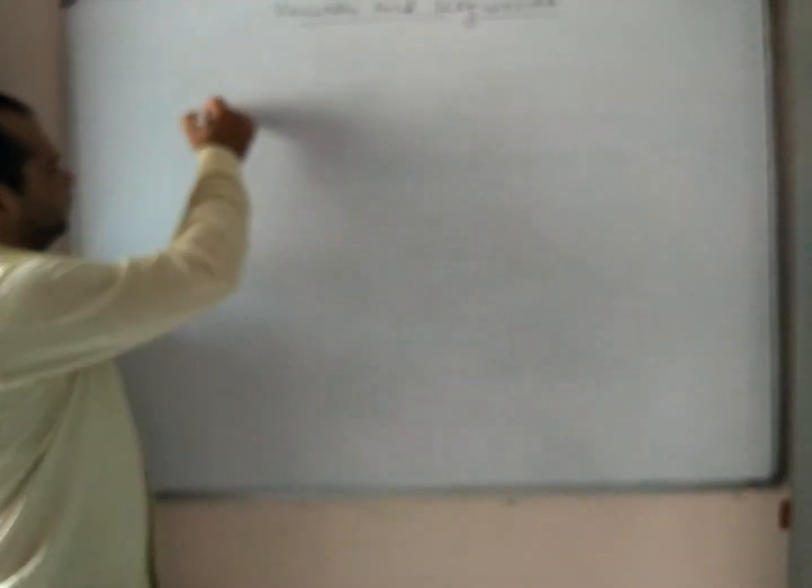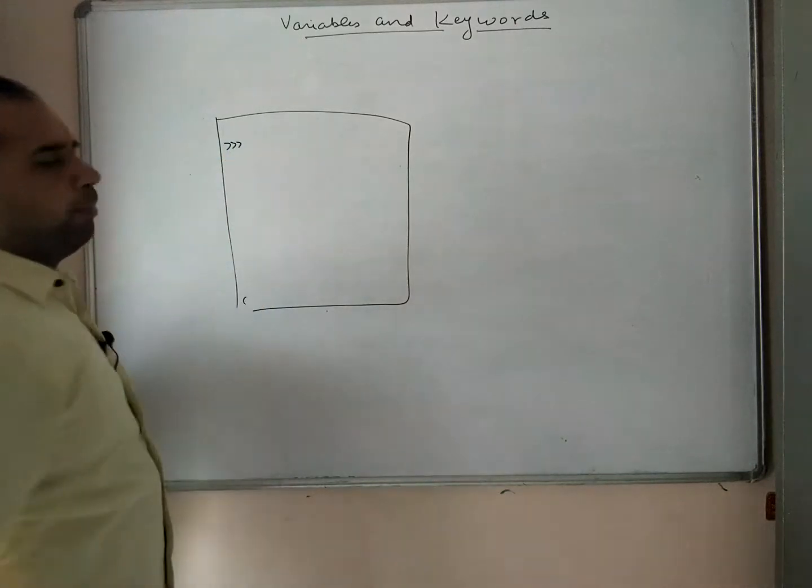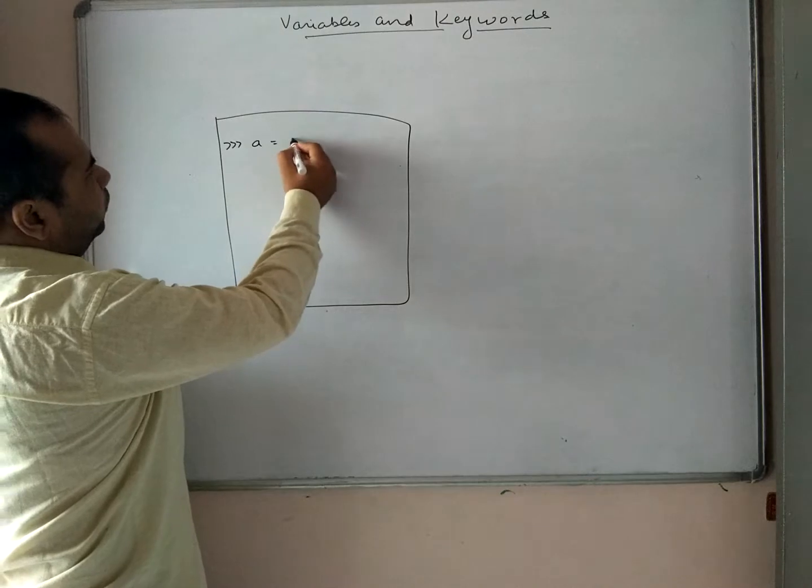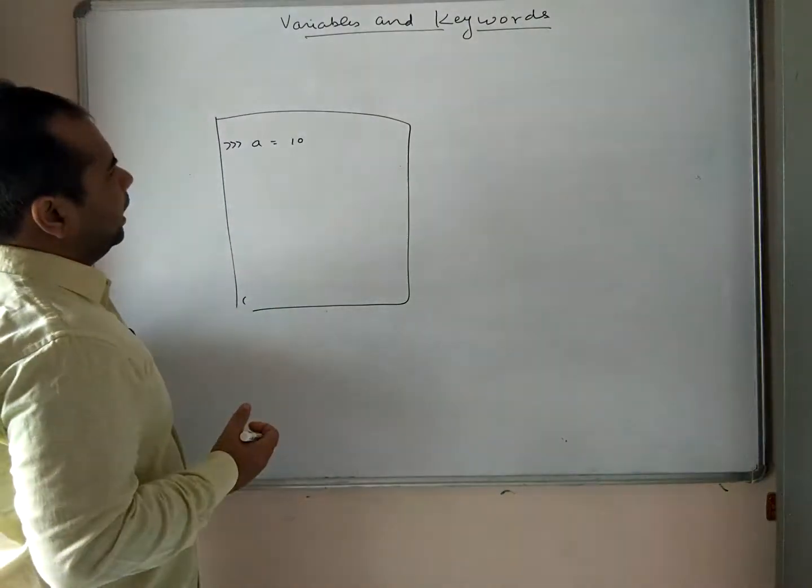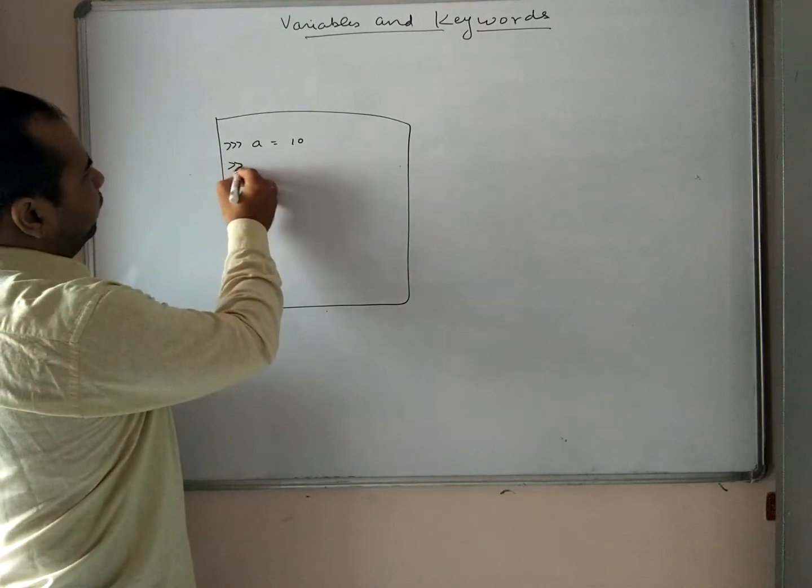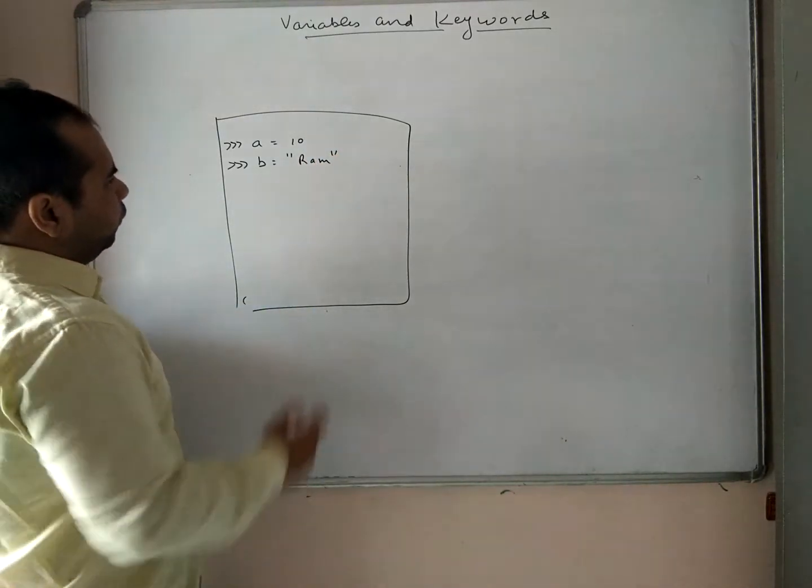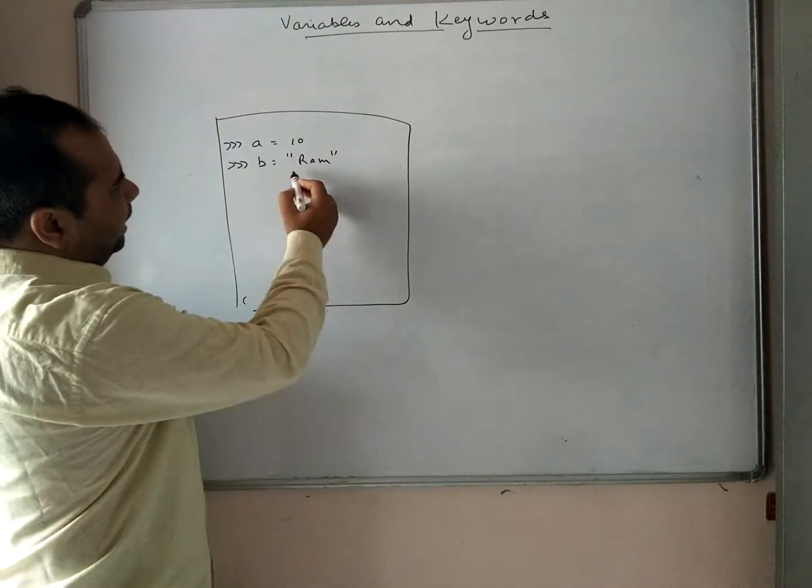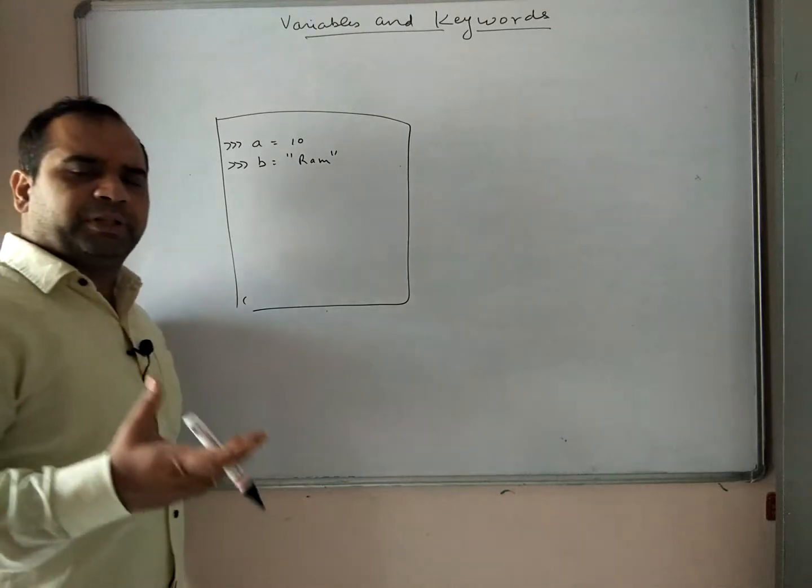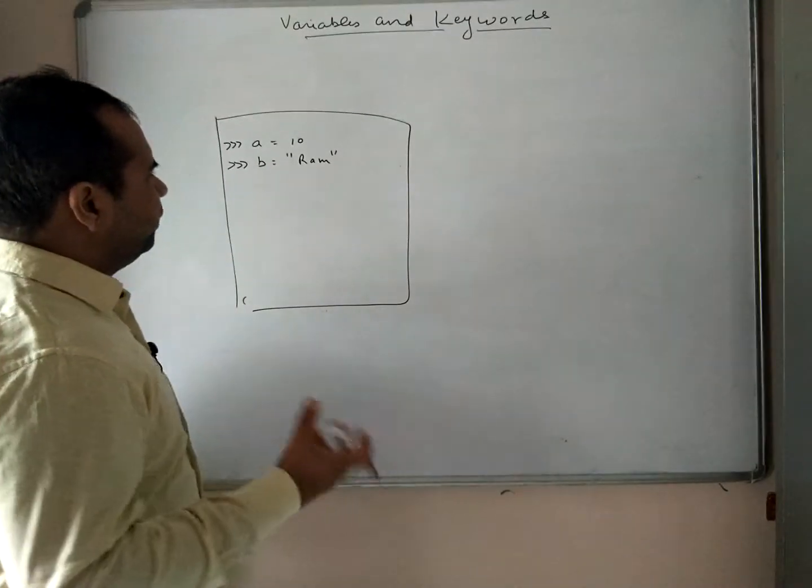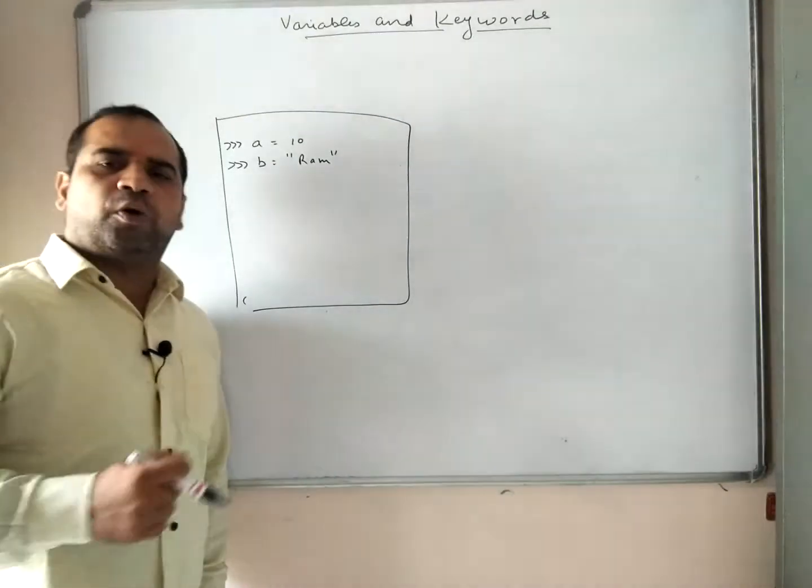Let us see. Suppose this is our IDE and we write at the command prompt of Python: a = 10. We don't need to write integer or float or any other thing while writing the variable. Or we can write b = 'Ram'. What is b? b is a variable and it is storing the string 'Ram'. We don't need to explicitly write whether it is a character or string, because the interpreter is intelligent enough to understand whether the variable would be an integer or a string.